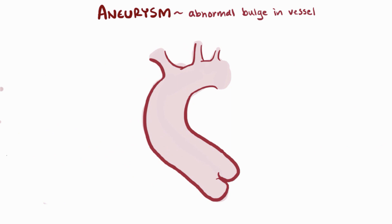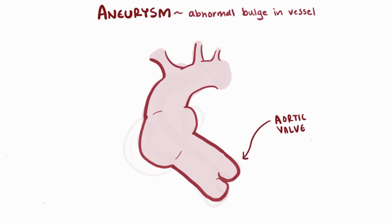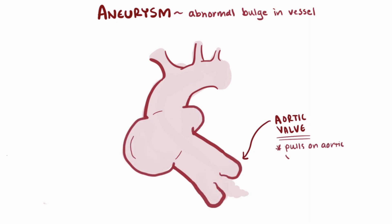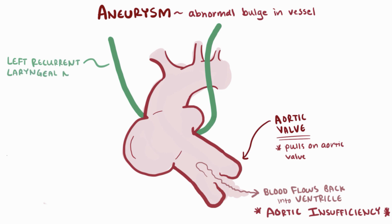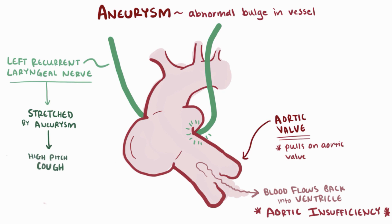In thoracic aneurysms specifically, a very serious complication can occur if the aneurysm is right above the aortic valve. As the aneurysm dilates, it pulls on the walls around the aortic valve, preventing it from closing properly and allowing blood to flow back into the ventricle during ventricular diastole — a condition called aortic insufficiency. This can also cause a high-pitched, brassy-like cough because the left recurrent laryngeal nerve, which wraps around the aorta, is stretched by the expanding aorta.